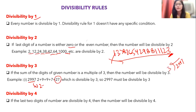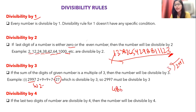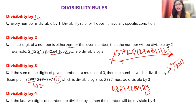For divisibility by 4: just focus on the last two digits of the number. If the last two digits are divisible by 4, then the whole number is divisible by 4. For example, given a large number like 48899678424, just check the last two digits — 24 is divisible by 4, so the entire number is divisible by 4. Things become easy once you understand them.